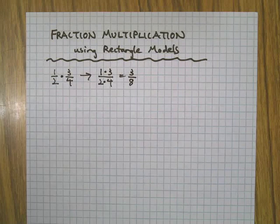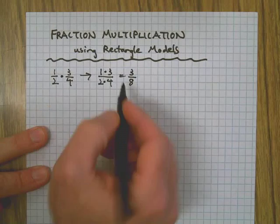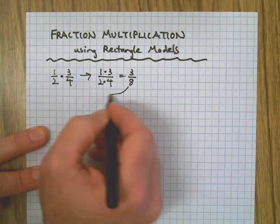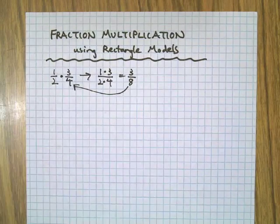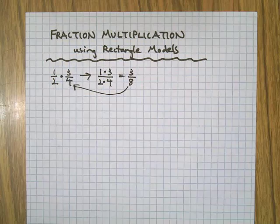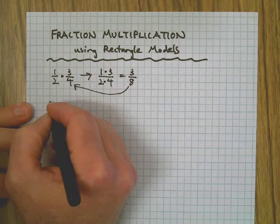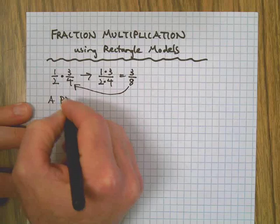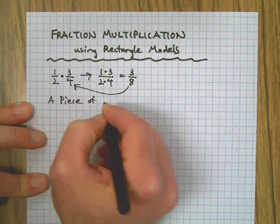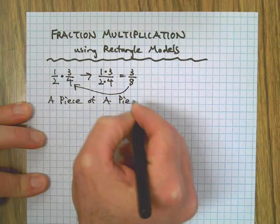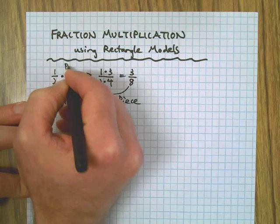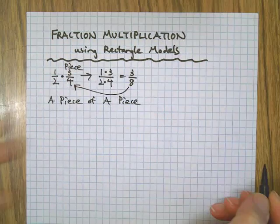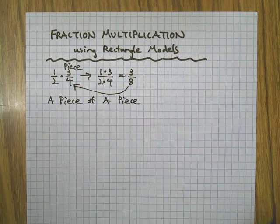I think it's important to understand why that works and what's happening. So to truly understand this, let's go back to the beginning here. What's happening when you're multiplying a fraction is you're taking a piece of a piece. What I mean by that is three-fourths is already a piece of something, it's part of something larger, part of the whole.